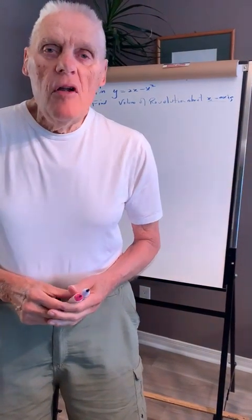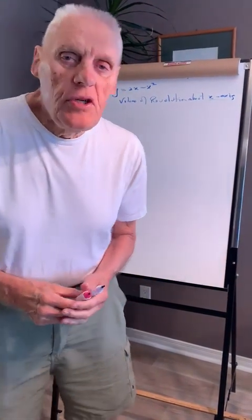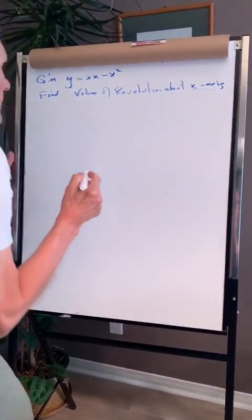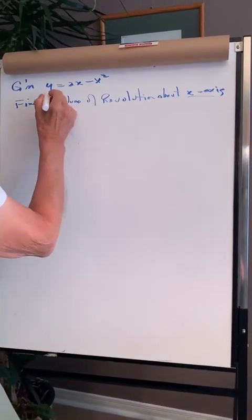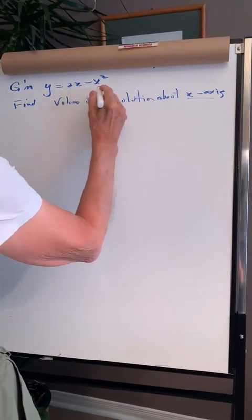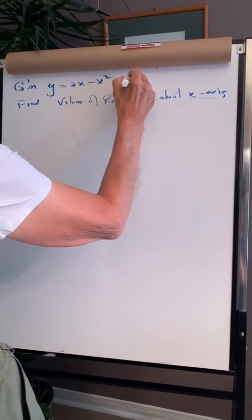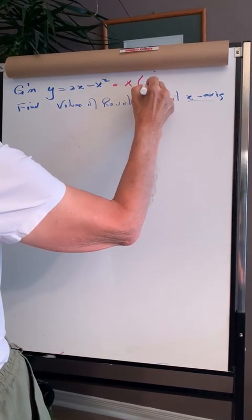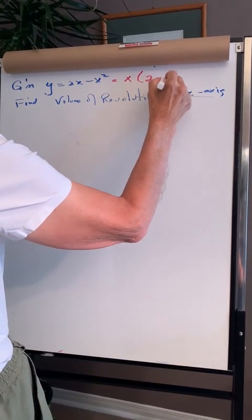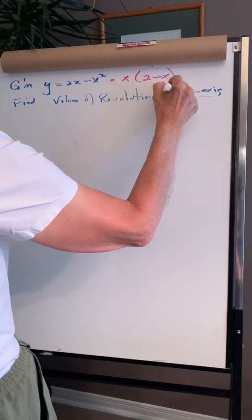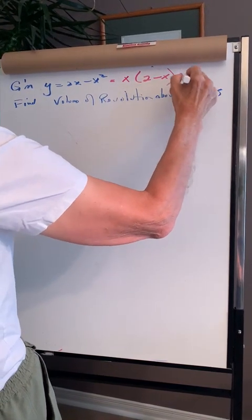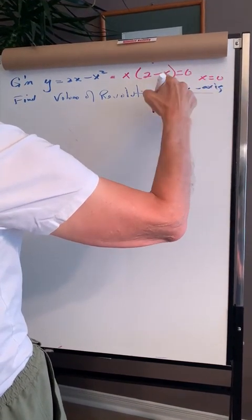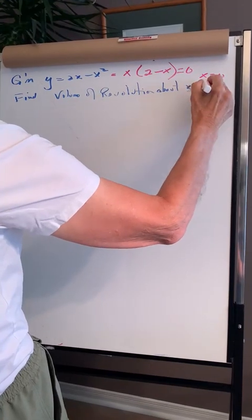We're going to find the volume of revolution of a parabola about the x-axis. This is my parabola, and I'm going to factor out the x and I will end up with 2 minus x. If I set it equal to 0, x will be 0 and x will be 2.